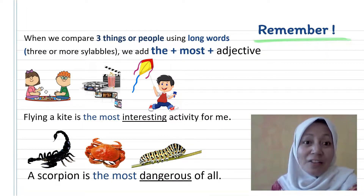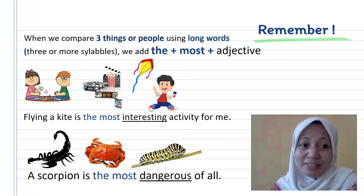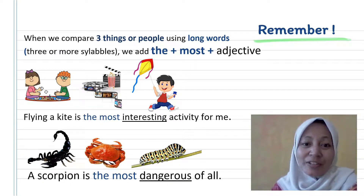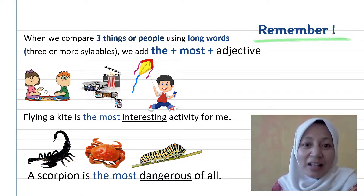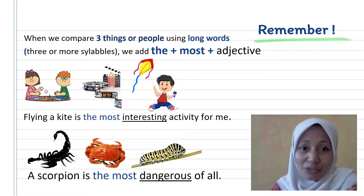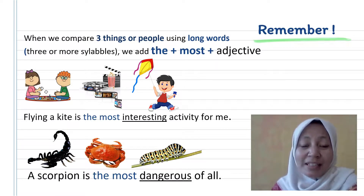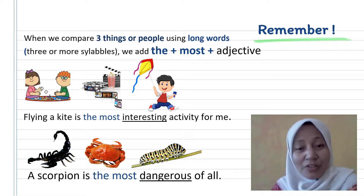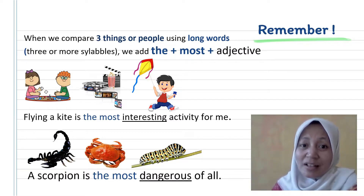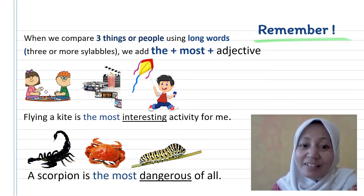When we compare three or more things using long words — adjectives with three or more syllables — we add 'the most' before the adjective. Look at the example: three activities — playing with friends, watching a movie, and flying a kite. We use 'interesting,' which has four syllables. The sentence is: 'Flying a kite is the most interesting activity for me.'